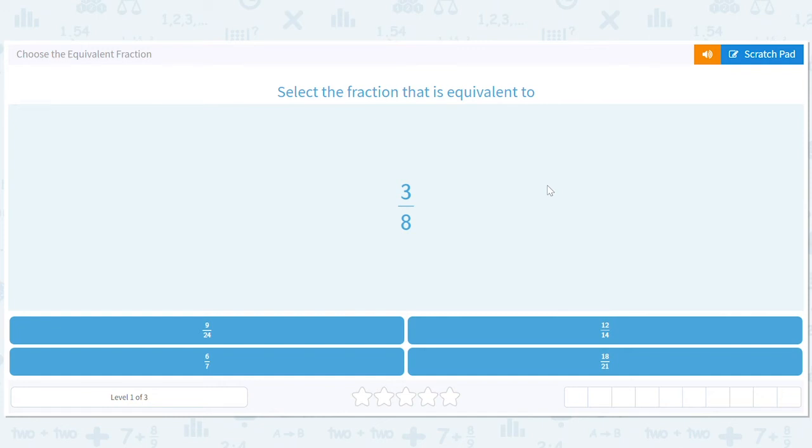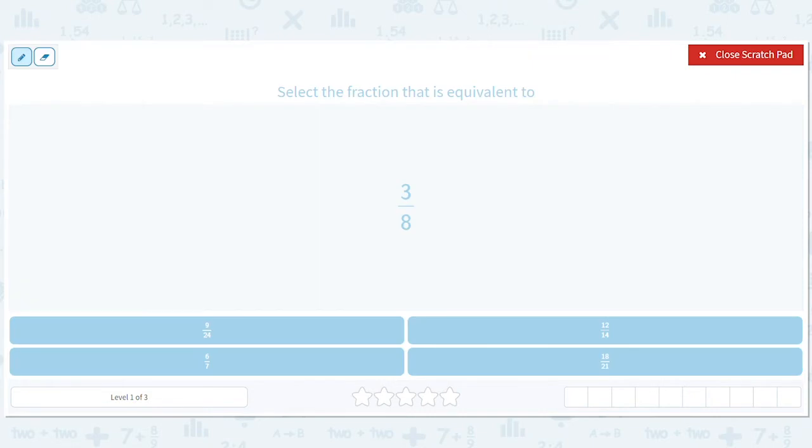Choose the equivalent fraction. Select the fraction that is equivalent to 3 eighths. Well, the way we do that, I think one fun way to do that is to basically just multiply. If it's reduced, then we can basically un-reduce by multiplying the top and the bottom by a couple of choices, right? So we can try two.